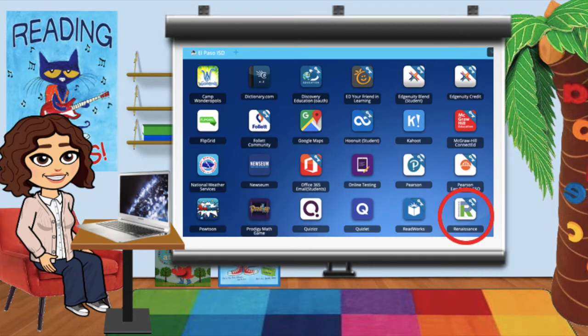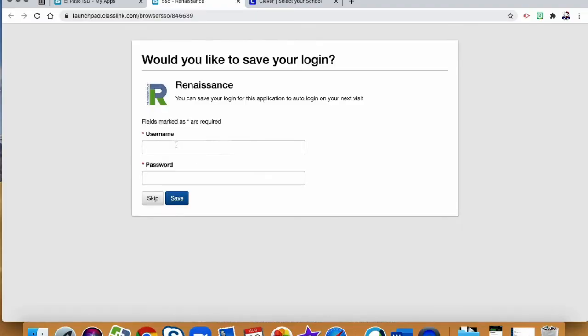Next, you will look for the Renaissance link. It will have an R, and it looks kind of blue, green, and gray. You're going to go ahead and click on that Renaissance link to go to Renaissance. For many of you, this might be your first time logging into Renaissance this school year. So, you may need to go ahead and log in one more time using the first part of your EPISD email address and your password.